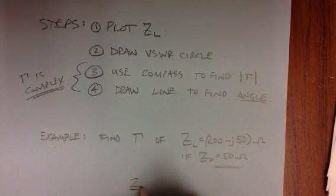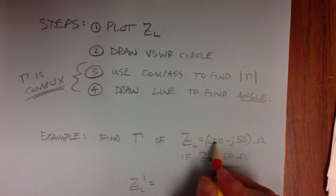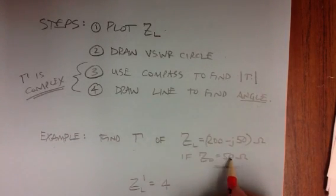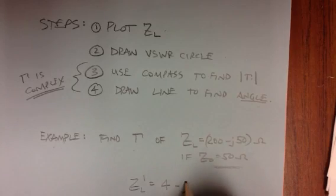So we normalize. The normalized impedance is going to be, 200 over 50 is 4, minus J, 50 over 50 is 1, so 4 minus J1.